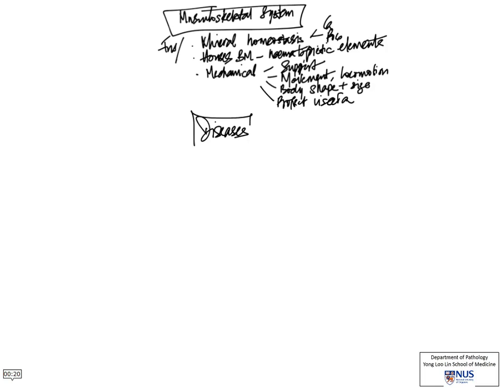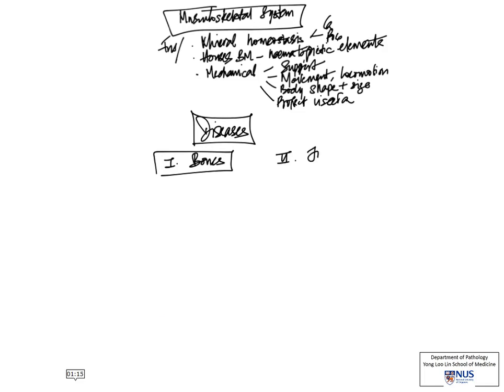Now let's start to focus on diseases of the musculoskeletal system. We will want to divide them into two big categories: diseases of the bones and diseases of the joints.